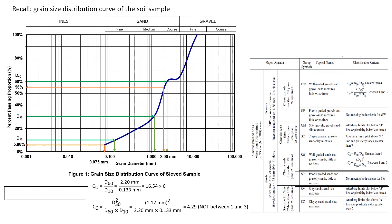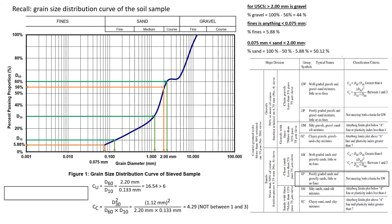Before we calculate the coefficients, how do we know that this is something we have to calculate? This is based on the fact that the percent gravel for USCS is 44%, and the percent fines is 5.88% — the same as the MIT standard. Notice that for USCS, the standard for gravel is actually different: for MIT it was anything greater than 4.75 millimeters, but for USCS it's anything greater than 2.00 millimeters. This is what differentiates MIT from USCS classification — they define gravel differently.